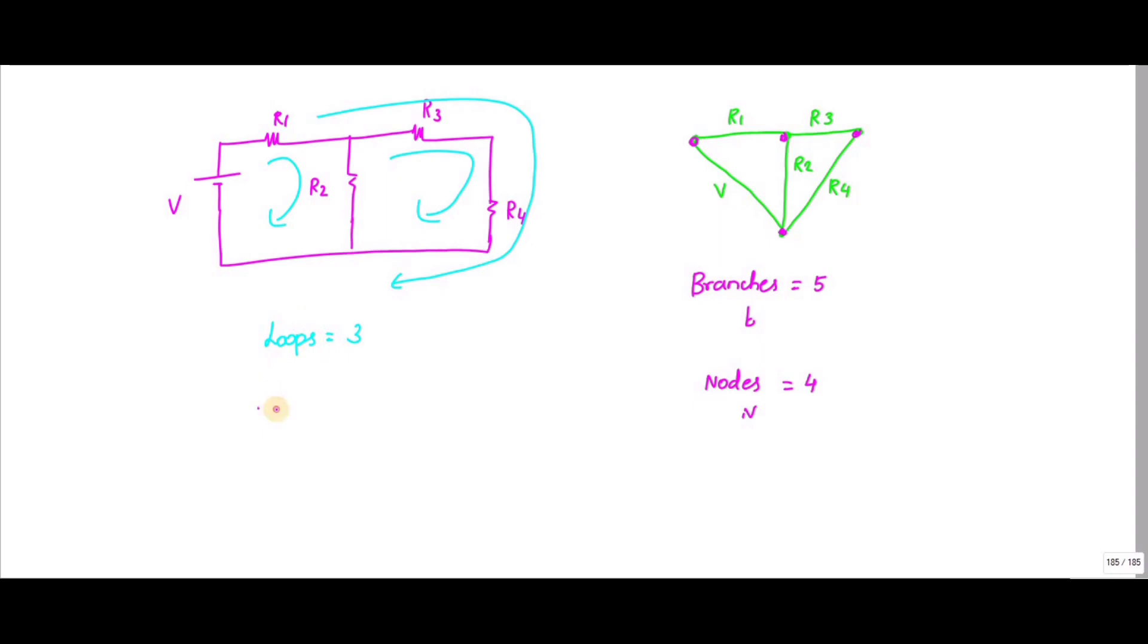And then mesh. If you see, this is your first loop and this is your second loop and this is your third loop. This third loop contains the first loop and second loop, so this has to be avoided. If the third loop is containing the first loop and second loop, then that loop should be avoided. Therefore, you have only one and two meshes.